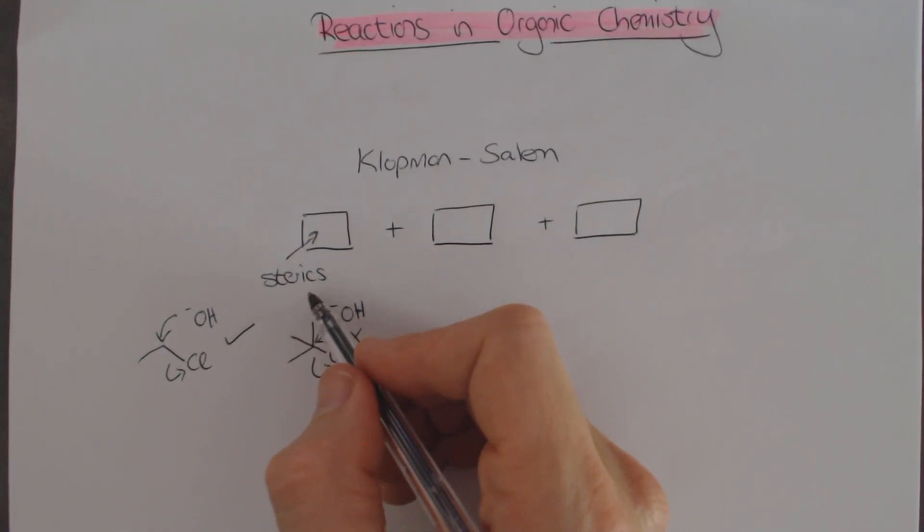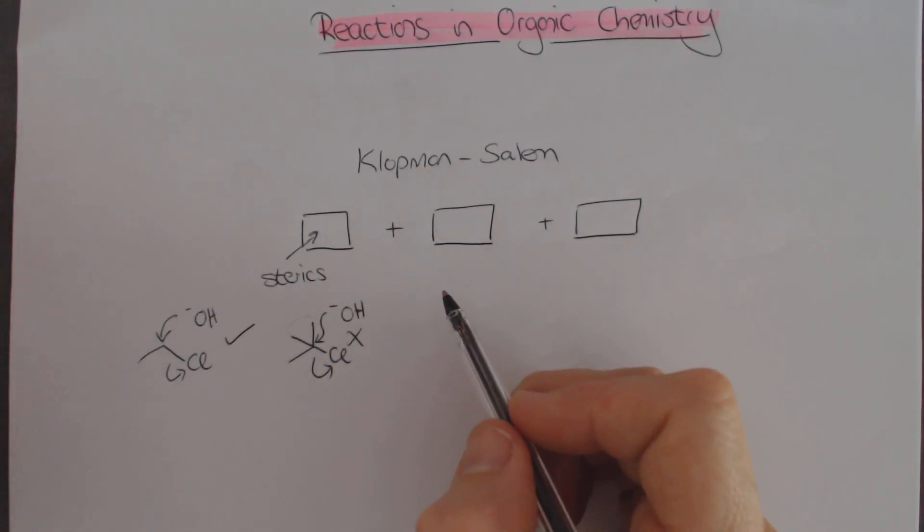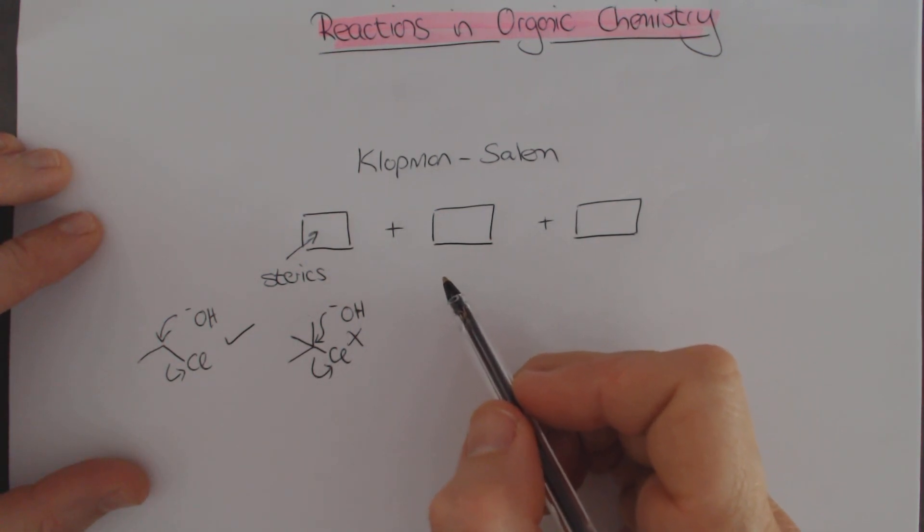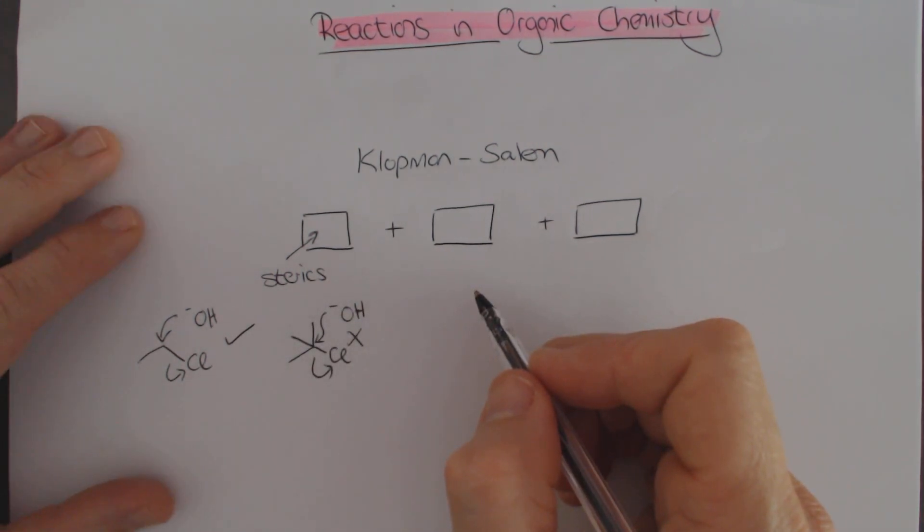However, if we tried exactly the same thing but on tertiary butyl chloride and added the same nucleophile hydroxide to kick out the chlorine, that just does not work at all. The reason is sterics, steric hindrance. This carbon is extremely bulky because of the tertiary butyl group, so it's very difficult for the nucleophile to react with that.